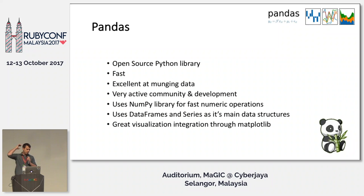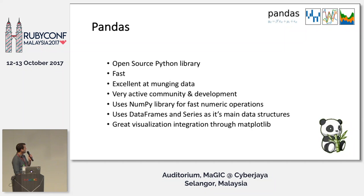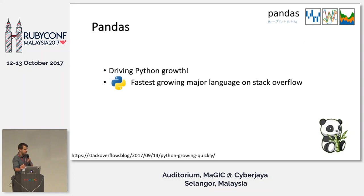So, what is Pandas? It's an open source Python library. The name comes from panel data analysis, and it was developed as a high-performance library for financial data, but it's since been taken over by the open source community. It's super fast — it uses NumPy as its underlying array for fast numeric operations. Its main data structure is the data frame, which you can think of like a table in Excel, and the series, which is kind of like a single column in that data frame. It has great visualization integration through matplotlib, a super active community, and a lot of its critical code paths have been ported to C via Cython. It's driving Python growth — a Stack Overflow blog published recently said Python is the fastest growing major language, and that growth is being driven by pandas being the most active tag within Python.